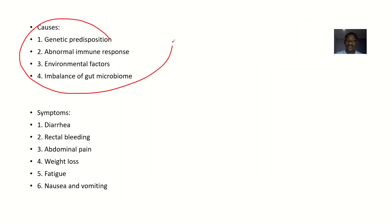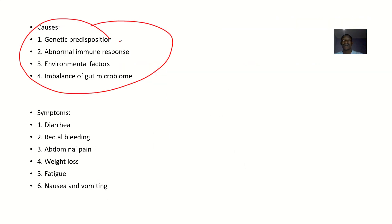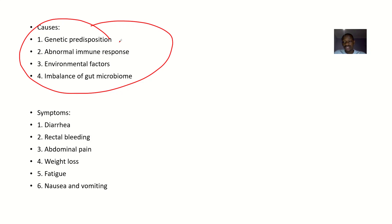What are the causes? What could make someone actually have these conditions? It could be due to genetic predisposition — meaning it has some genetic links. It could be due to some abnormal immune responses. It could be due to environmental factors. It could be due to an imbalance of the gut microbiome, because there are some normal flora — microorganisms that exist primarily in the gut. There's supposed to be a balance relating to the population of these microorganisms.